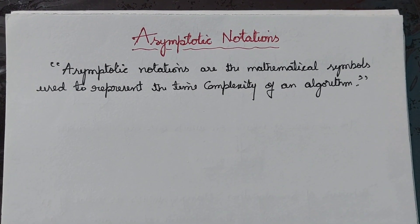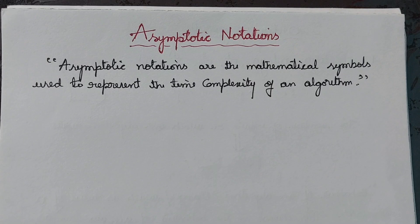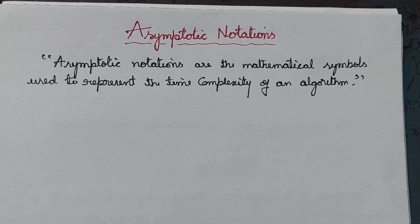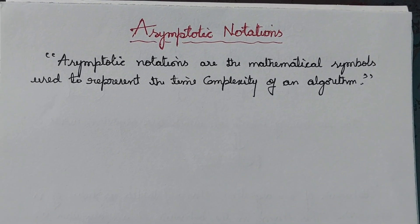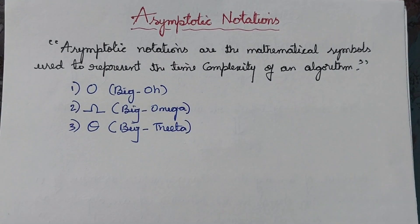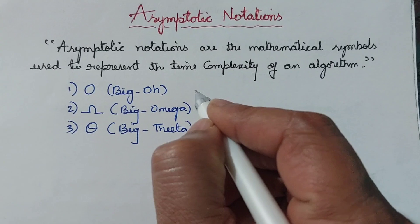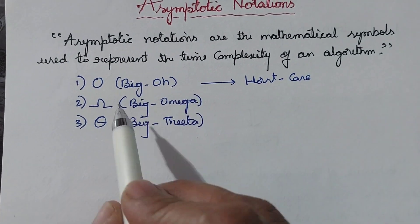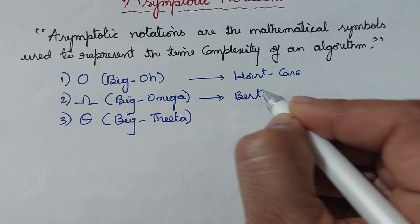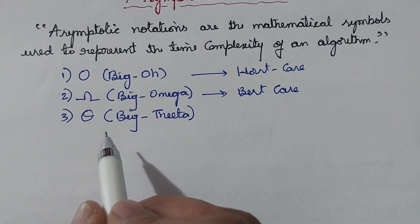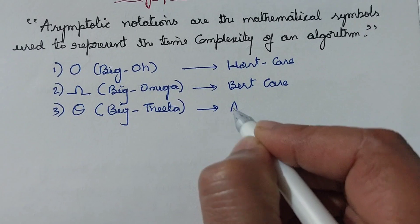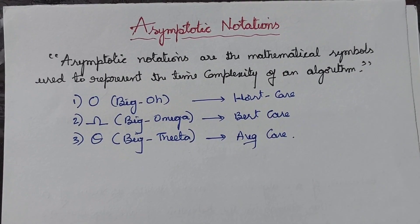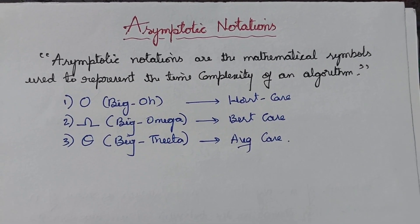Asymptotic notations are the mathematical symbols used to represent the time complexity of an algorithm. There are three such symbols: Big O, which is used to represent the worst case; Big Omega, which is used to represent the best case; and Big Theta, which is used to represent the average case of an algorithm.